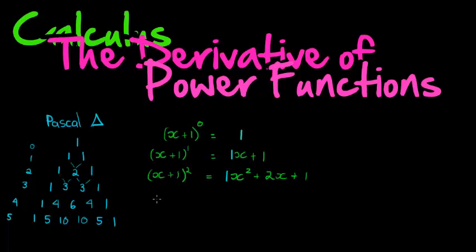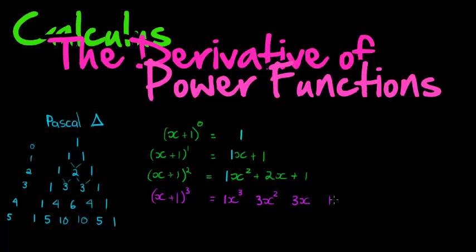So can you imagine what (x+1)^3 is going to be? We can at least know the coefficients: 1, 3, 3, 1 — from Pascal's Triangle. So (x+1)^3 = 1·x³ + 3·x² + 3·x + 1. And they're all positive.